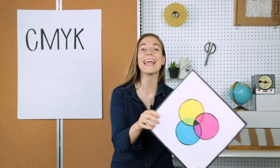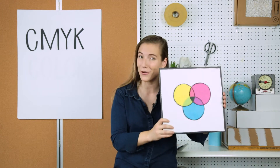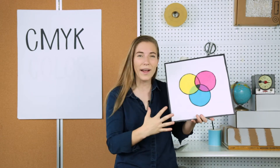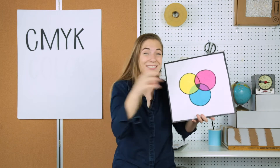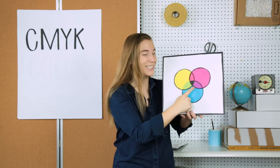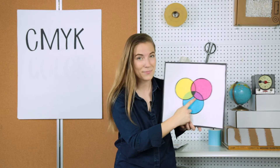CMYK is a subtractive color model, and that means that it starts white, and as you add colors and tones it gets muddier and muddier and darker and darker until it looks a lot like black.